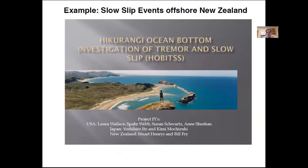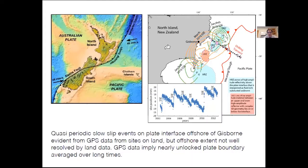Here's an example of using pressure gauges to look at a possible precursor: a slow slip event off New Zealand, a project led by Laura Wallace. In the North Island, the Pacific Plate subducts underneath at about five centimeters per year. A GPS site at Gisborne shows the site moving westward at about five centimeters per year, then jumping back eastward over about two weeks — that's a slow slip event. Over long periods, the site ends up pretty much where it started, suggesting coupling between the downgoing and upgoing plates is essentially zero over long periods.